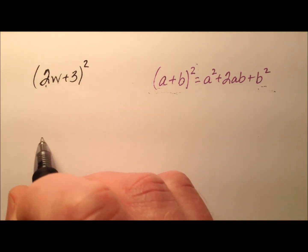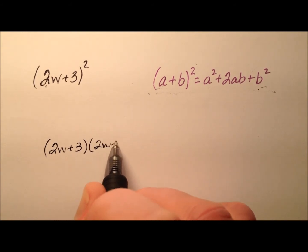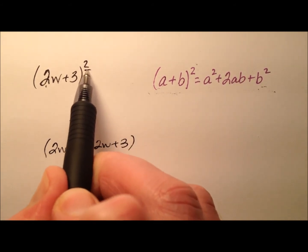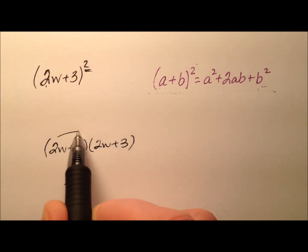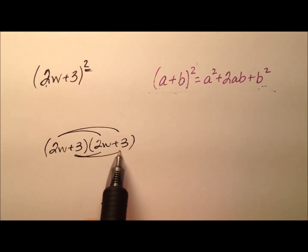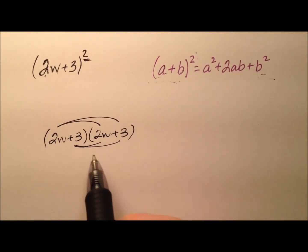Or you can go ahead and just put them side by side: 2w plus 3 times 2w plus 3, because when you're squaring something, aren't you just multiplying it by itself? So we could do this and then distribute it through. Let's go ahead and see what this one looks like first and then we can use the formula and I'll show you how it kind of simplifies it a little.